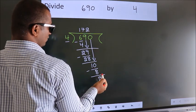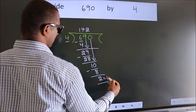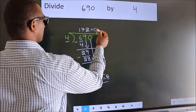No more numbers to bring down. So we stop here. This is our remainder. This is our quotient.